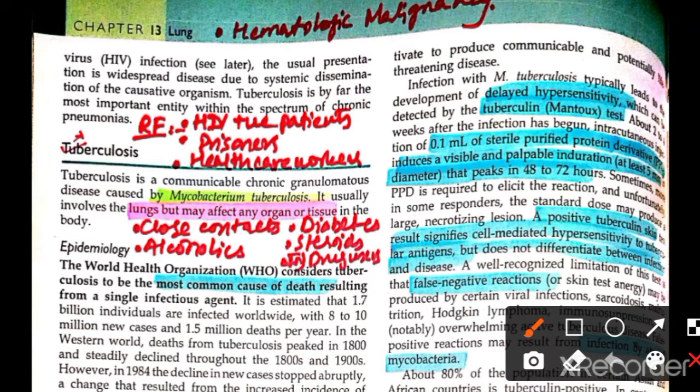I have highlighted the points you have to read so that it will be easy for you. For example, the pathogenesis of Mycobacterium tuberculosis is important.